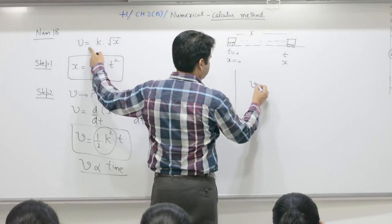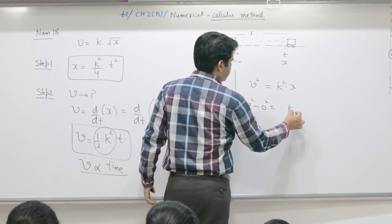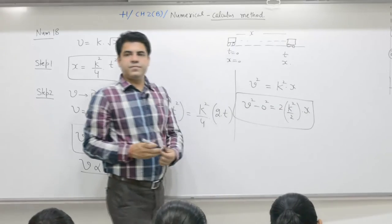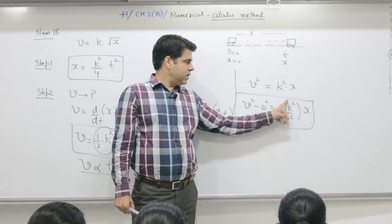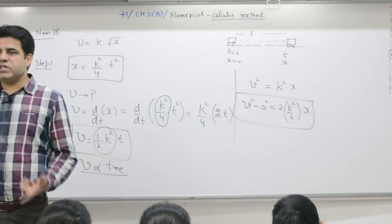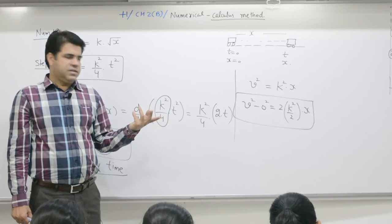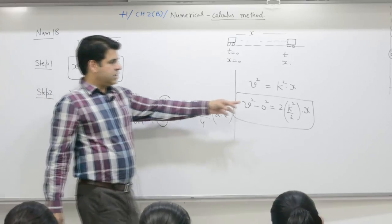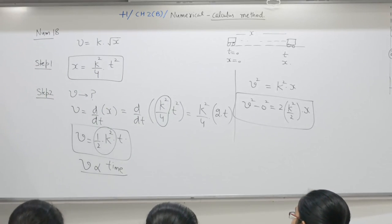Square both sides of v = k√x to get v² = k²x, which means v² - 0² = k²x. This form applies for uniformly accelerated motion. For uniformly accelerated motion, velocity is proportional to time: v = u + at. Here acceleration a = k²/2. This confirms the result.